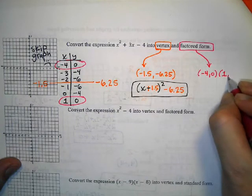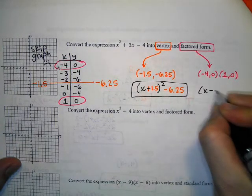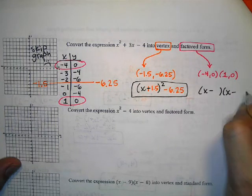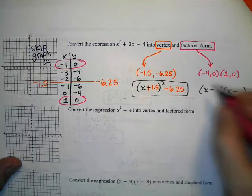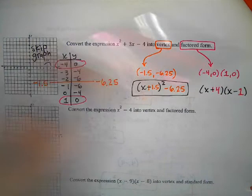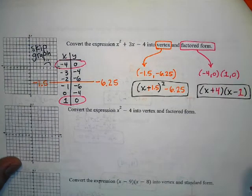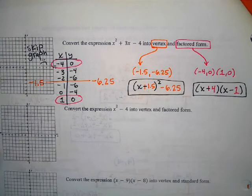Factored form. I have the -4, 0. And I have the 1, 0. The -4 becomes a +4. The 1 is a -1.